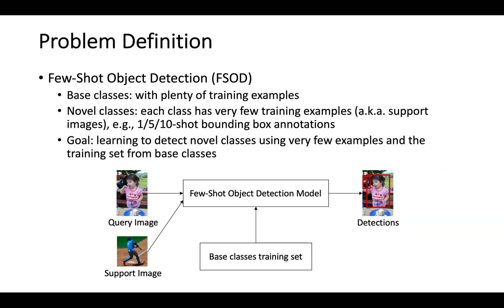In Few-Shot Object Detection, also known as FSOD, we have two sets of classes: base classes and novel classes. Base classes have plenty of training examples, while novel classes only have very few training examples, which are also known as the support images. The goal is to detect novel classes using the few-shot training examples and the abundant training set from base classes.